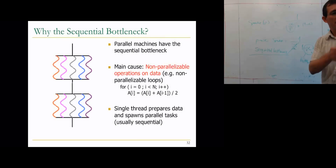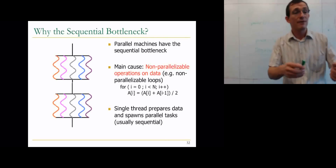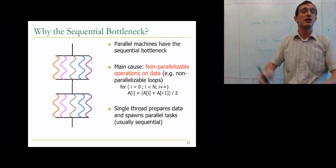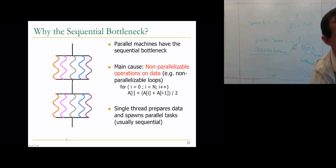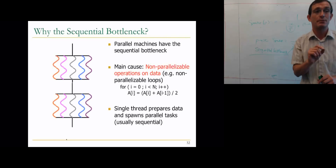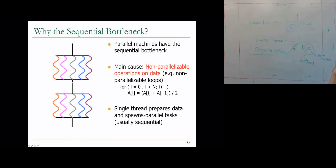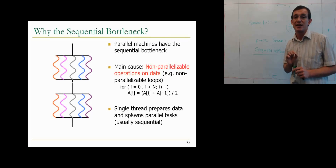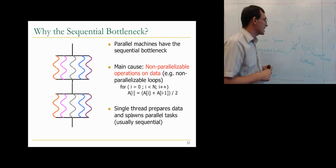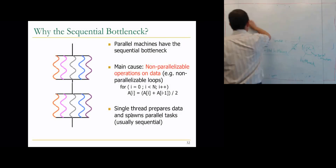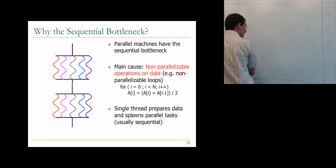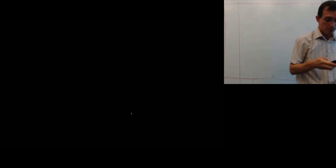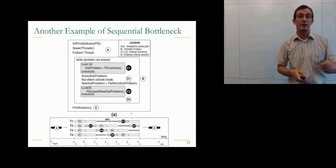Why do we have the sequential bottleneck? A parallel program may have a single thread spawning jobs, many parallel threads executing, then a single thread aggregating results, spawning more jobs, and so on. Non-parallelizable operations on data, non-parallelizable loops, or sequential thread spawning — even if a small fraction of time — become the bottleneck. This was the problem faced by designers of vector machines like Cray from the very beginning.